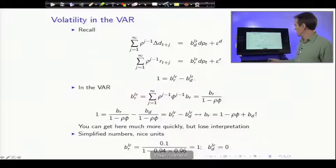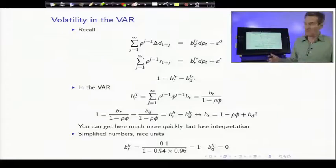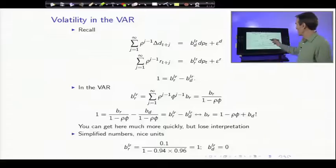And just in terms of identities, wait a minute, br 1 minus rho phi, bd over 1 minus rho phi. We've kind of proved that, but that's the same identity we had all along. Multiply both sides by 1 minus rho phi, and you have br minus bd is 1 minus rho phi. We showed that to begin with. In terms of algebra, we didn't have to go through all this.